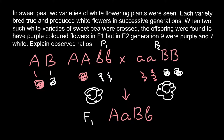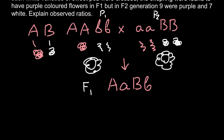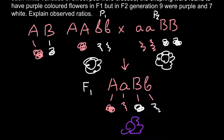In F1, one normal protein would be produced and one misshapen protein by the recessive allele. One normal enzyme would also be produced, along with a defective enzyme from the defective allele. But as you can see, in a plant with this genotype we find normal protein that can be turned into purple pigment and normal enzyme to modify it. So the color of this F1 plant would be purple — we see restoration of the original color.